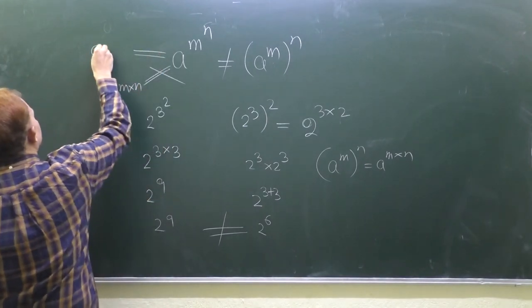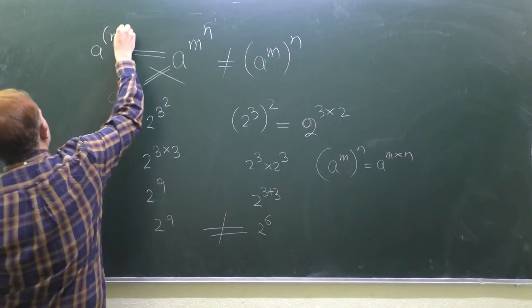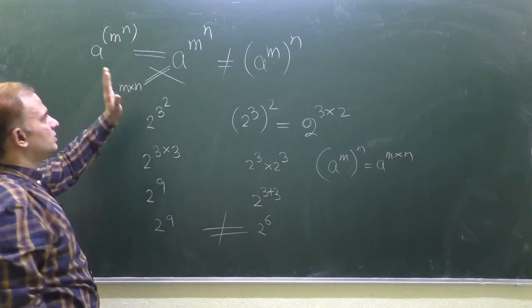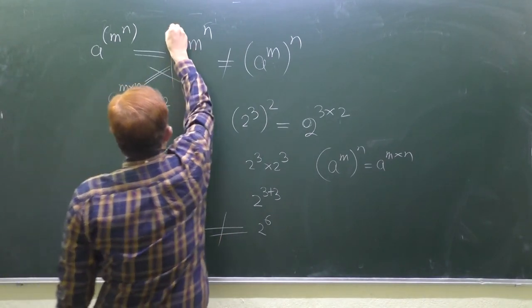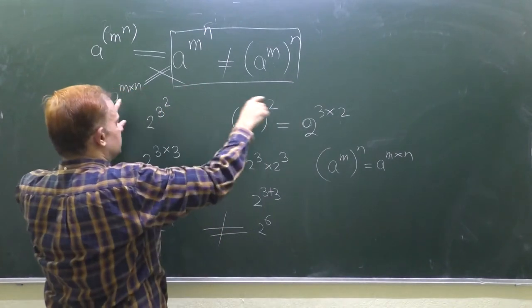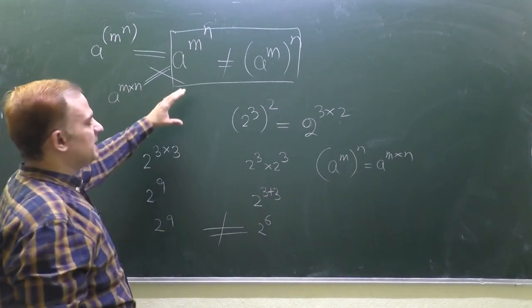So this you can write in this way: a to the power m to the power n. But this you cannot write like this. So ultimately, these two are not the same. Keep this thing in mind, and this example will clear the picture for you.